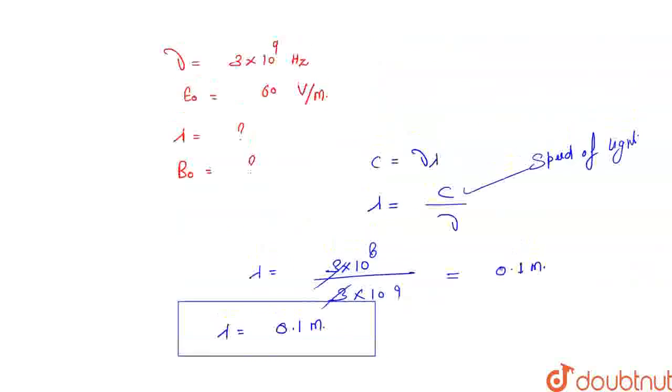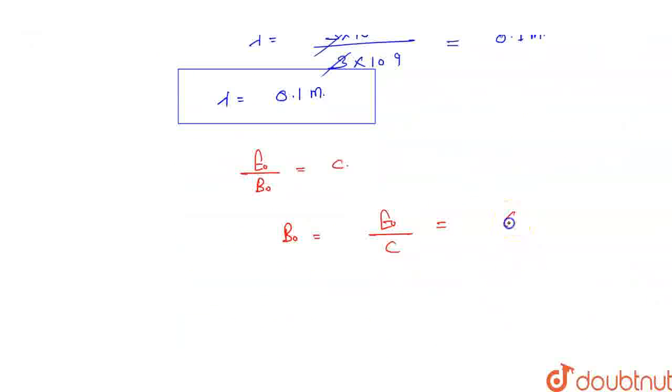E₀ is 60 V/m, and c is 3×10⁸. So B₀ = 60/(3×10⁸), which gives us 2×10⁻⁷ tesla.